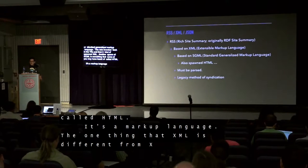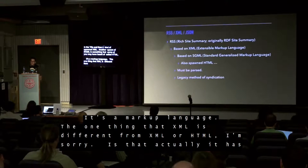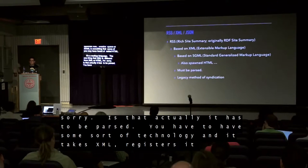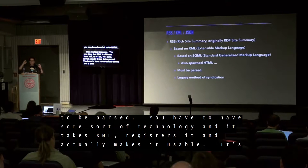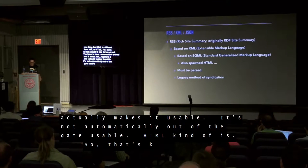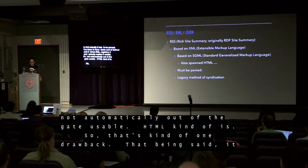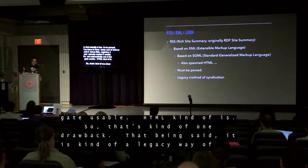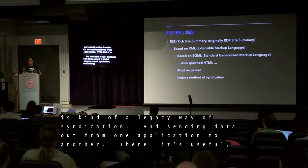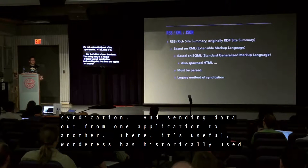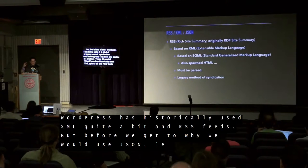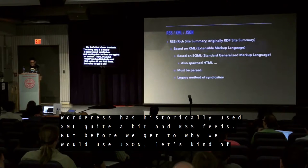One thing that XML is different from HTML is that it actually has to be parsed. You have to have some sort of technology that takes XML, registers it, and makes it usable — it's not automatically usable out of the gate. HTML kind of is. So that's one drawback. That being said, it is a legacy way of syndication and sending data from one application to another. WordPress has historically used XML quite a bit and RSS feeds. But before we get to why we would use JSON, let's look at that code.